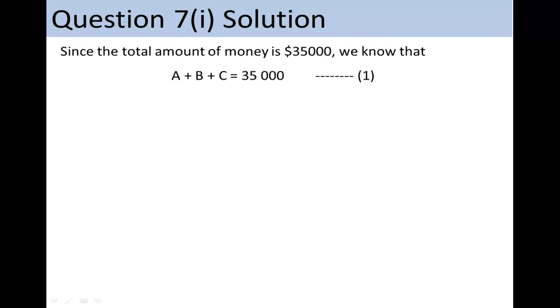First, since the total amount of money is $35,000, we know that A plus B plus C must be equal to $35,000.